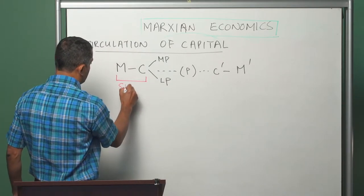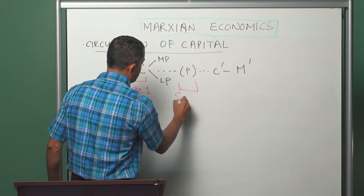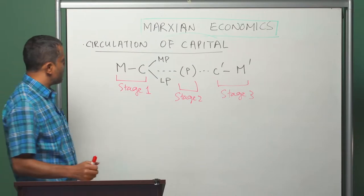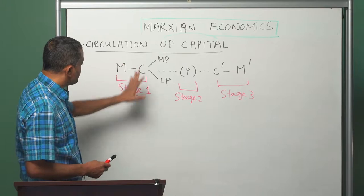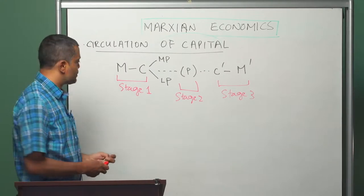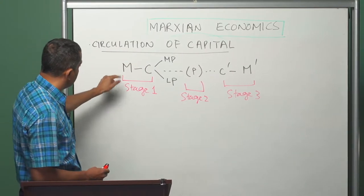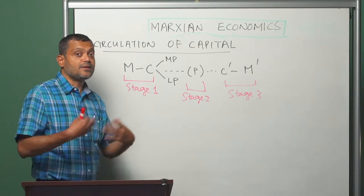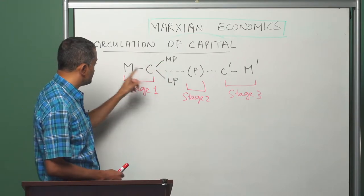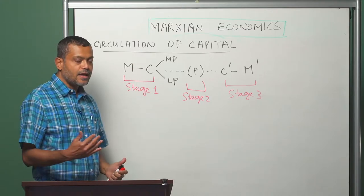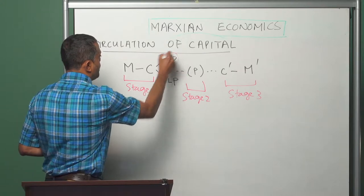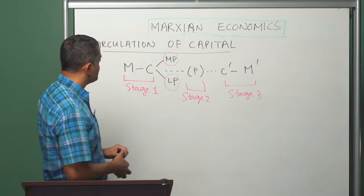In the first stage, represented by MC, what happens is the capitalist comes to the market with a sum of money represented by M. He comes to the market as a buyer of commodities. With that sum of money he purchases a bundle of commodities represented by C. So MC, which is the first stage of the circuit, is where the capitalist comes to the market with a sum of money as a buyer and purchases two types of commodities: means of production and labour power. That is the first stage of the circuit.